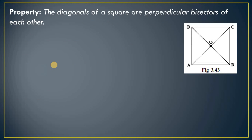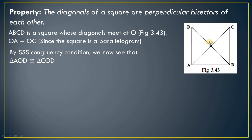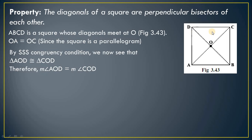To verify that the diagonals of square ABCD are perpendicular bisectors, note that the diagonals meet at O. Since a square is also a parallelogram, OA equals OC. Consider triangles AOD and COD: side OD is common, OA equals OC, and since all sides of a square are equal, AD equals CD. By the SSS congruence property, triangle AOD is congruent to triangle COD, so angles AOD and COD are equal.